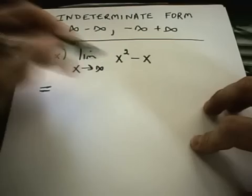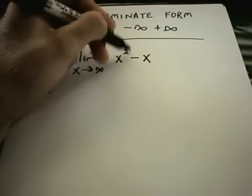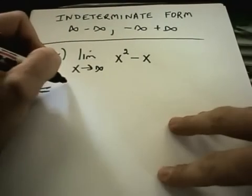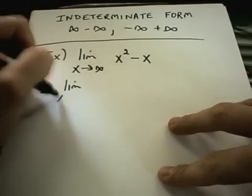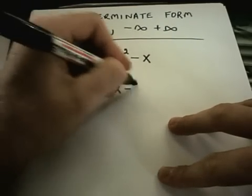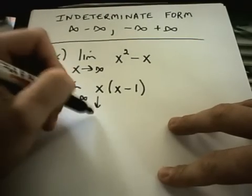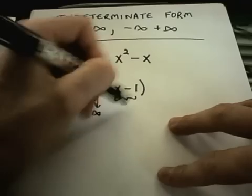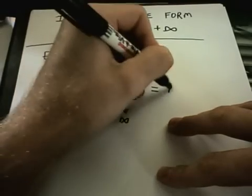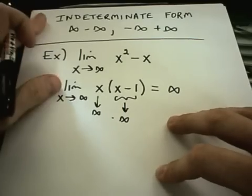In this case, the limit as x goes to infinity of x squared minus x. Intuitively, x squared is getting much bigger, much faster than x, so it seems like this should still go off to infinity. An easy way to justify that is by factoring out an x. Now as x goes to infinity, x is going to infinity and x minus 1 is also going to infinity. You have infinity times infinity, which is infinity. And that's your answer.